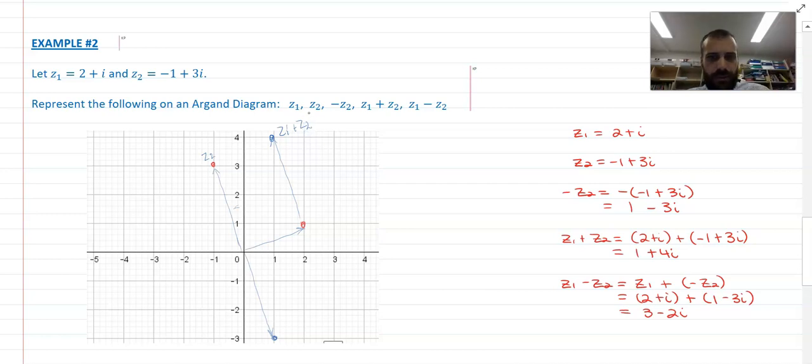And z1 minus z2. So I'm going to keep z1 where it is, and then I'm going to take z2, turn it into a negative, which I already have here, and then move it over here. And that is z1 minus z2. So that's it.